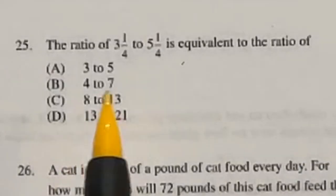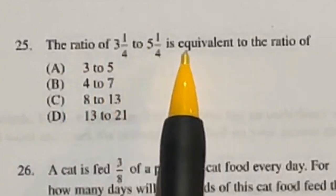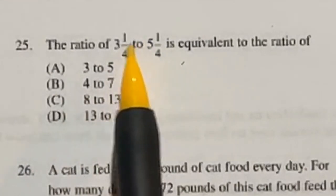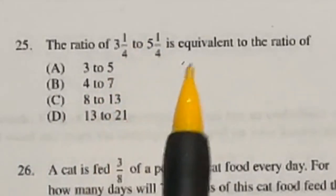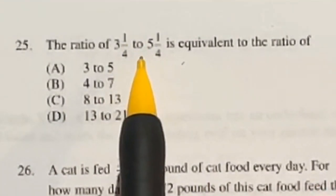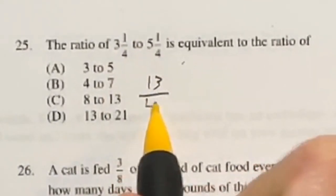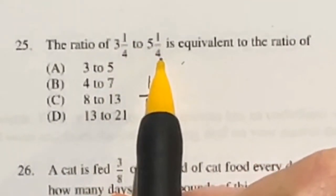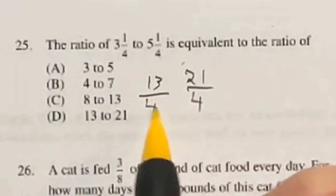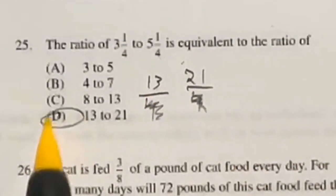Number 25 is a bit tricky — it asks whether the ratio of 3 and a fourth to 5 and a fourth is equivalent to which of the answer choices. Without a calculator, I'll convert to improper fractions: 3¼ becomes 13/4, and 5¼ becomes 21/4. Multiplying both by 4 cancels the denominators, giving us the ratio of 13 to 21, which is answer D.